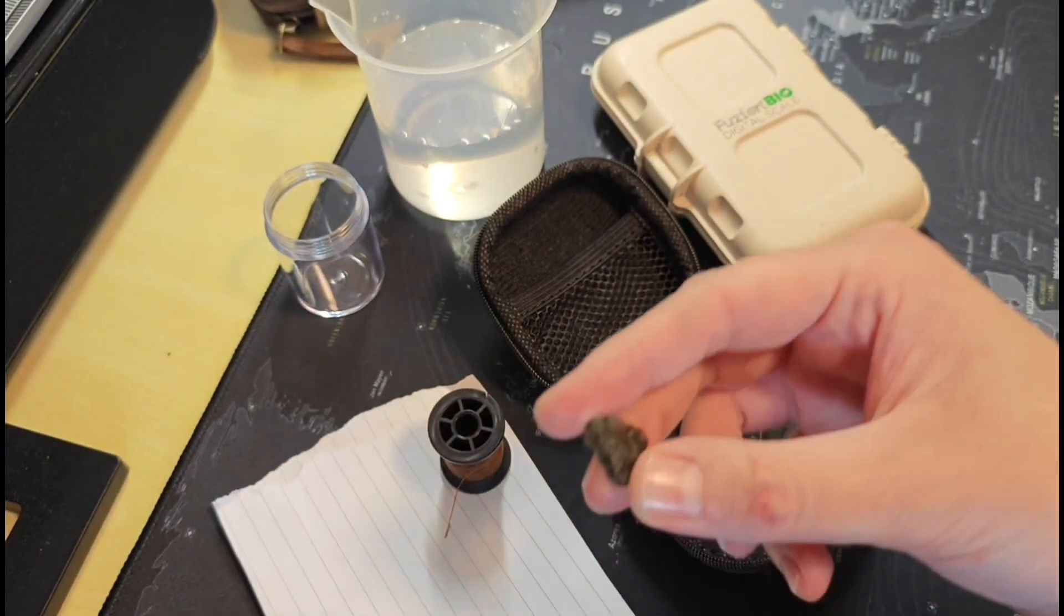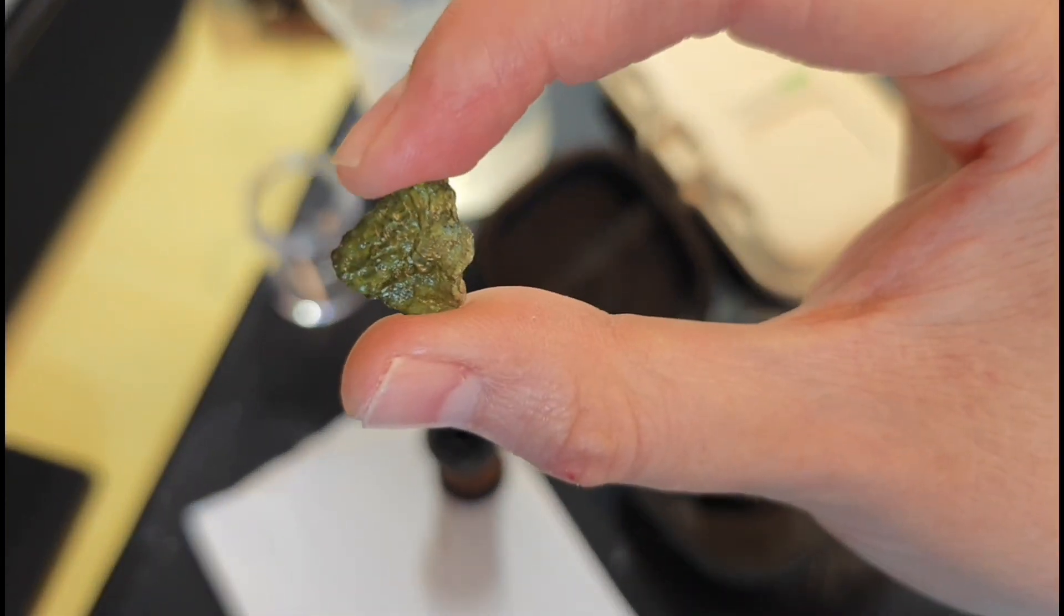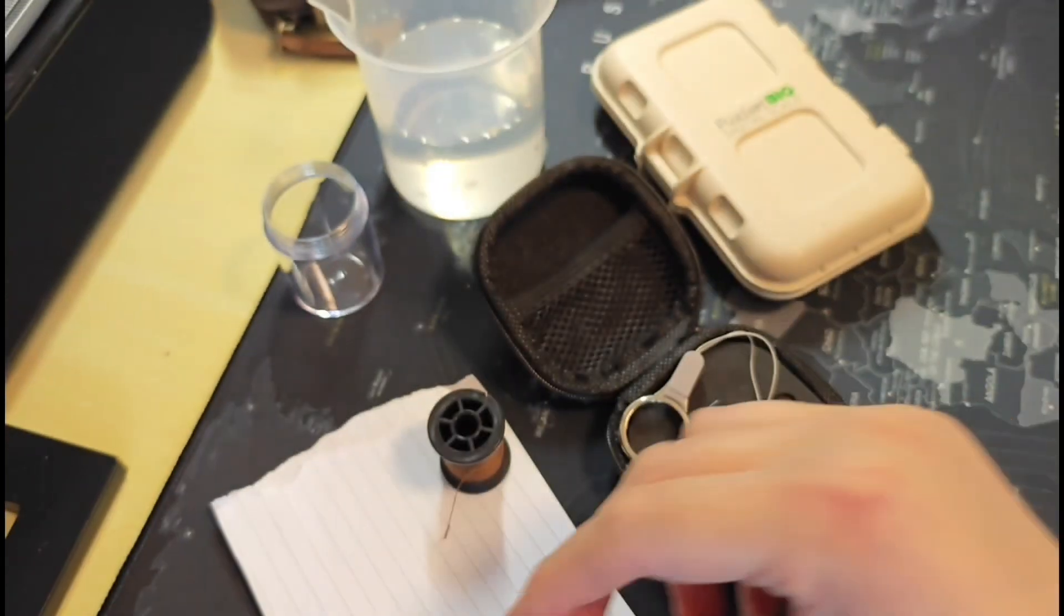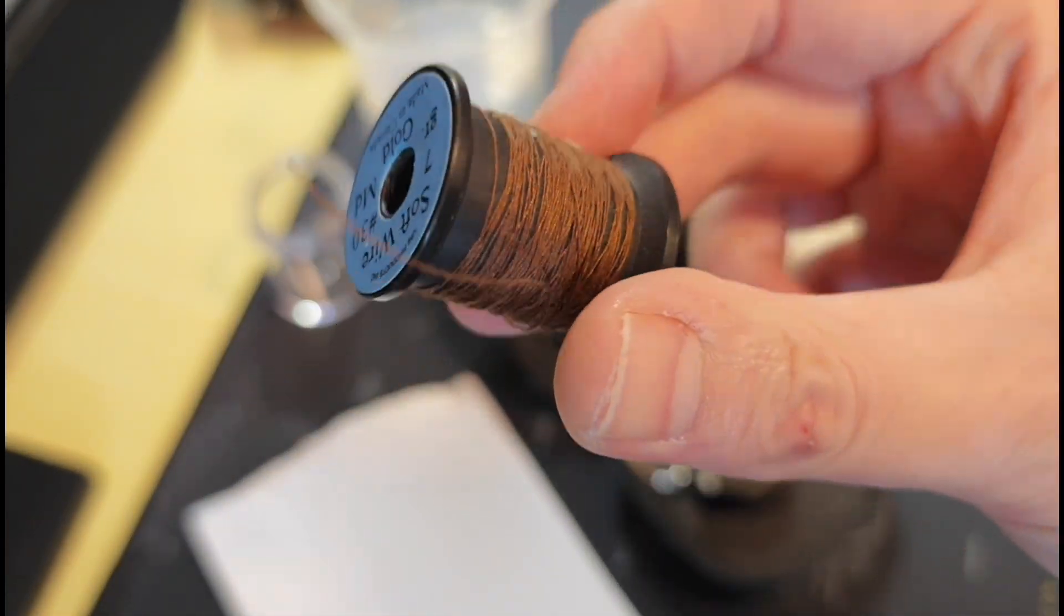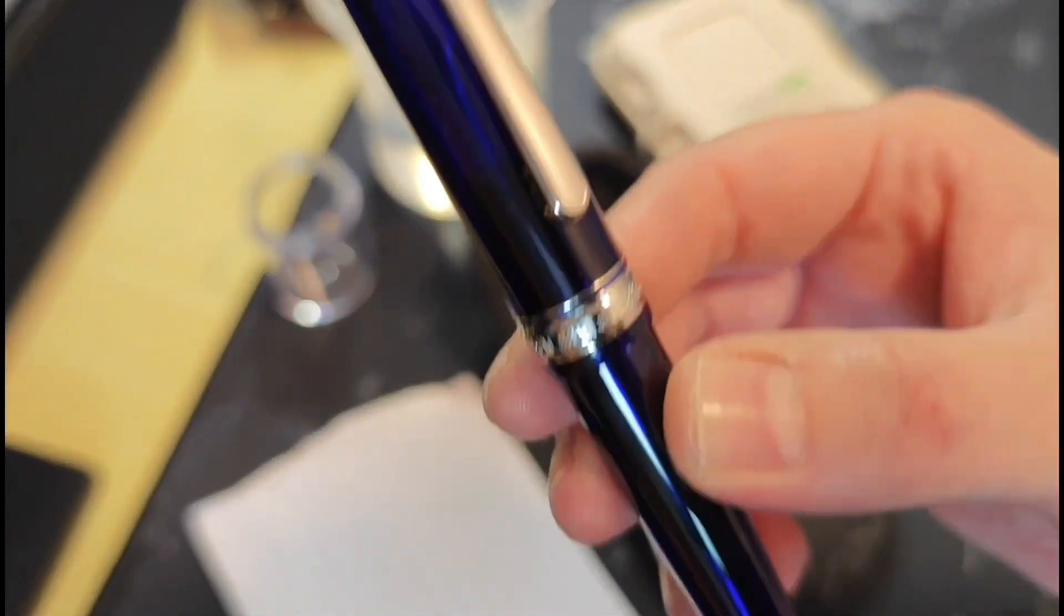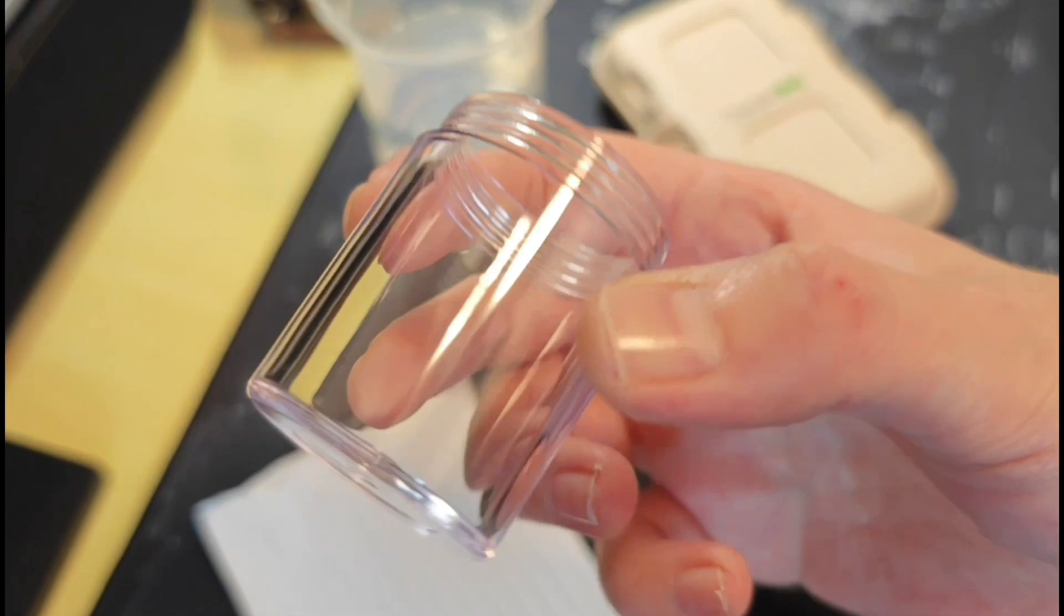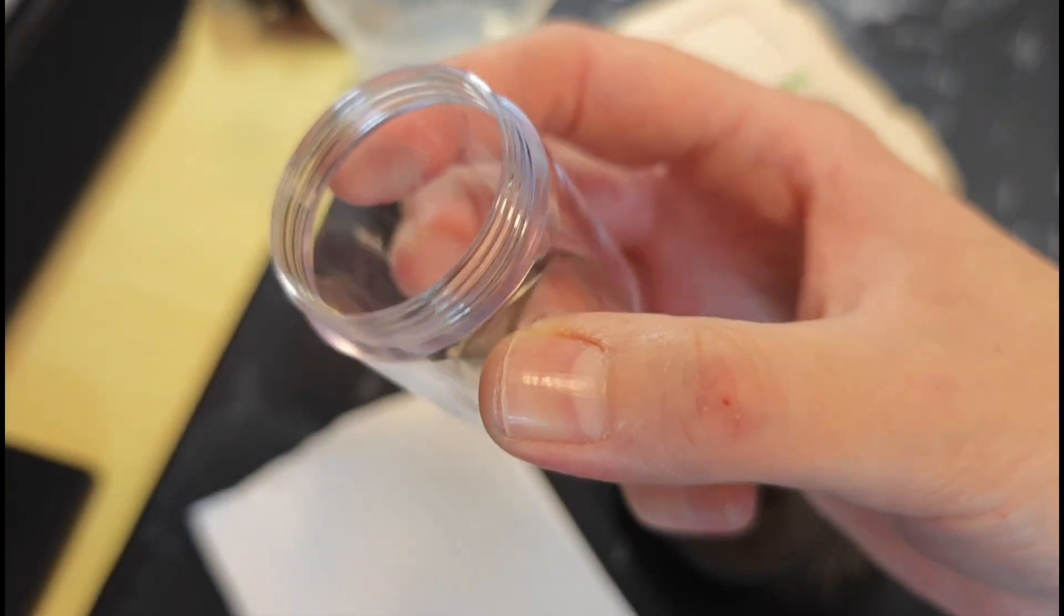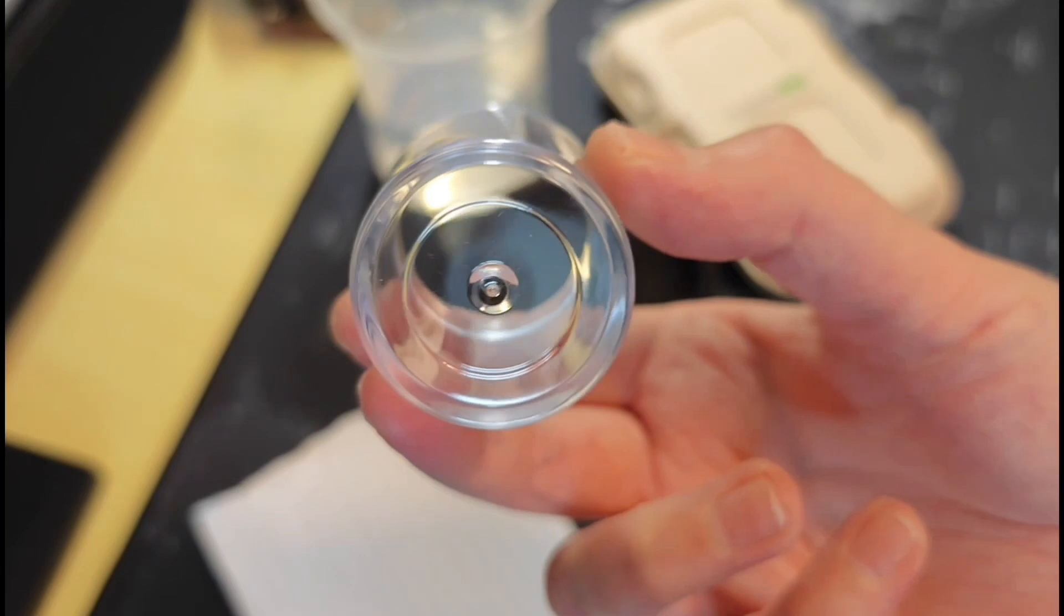All you need is a nice piece of Moldavite, at least hopefully it's a nice piece of Moldavite. You need some thin thread, this is just some brown sewing thread. You need a pen, a small piece of paper, a little plastic container larger than your piece of Moldavite but not too large, not too heavy.